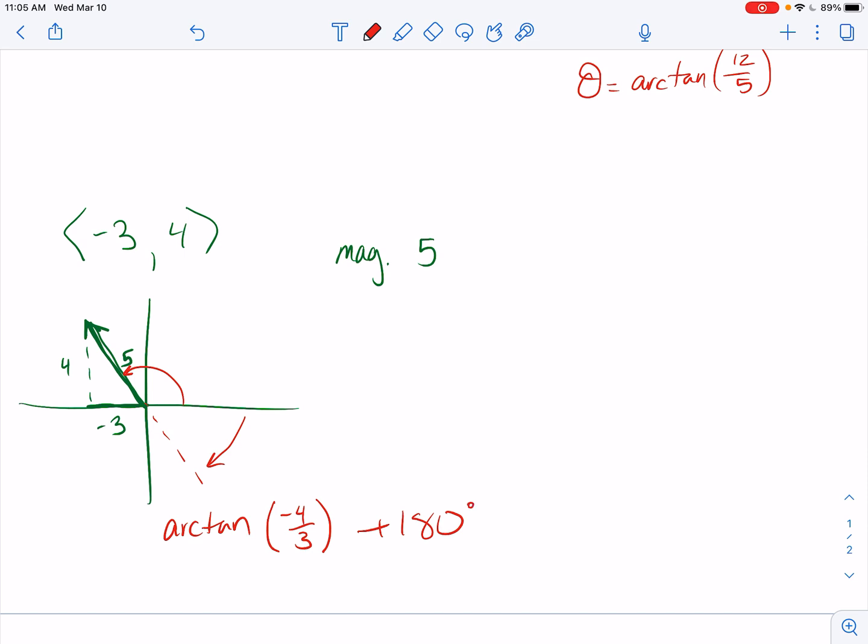Or we could say that it's arctan of negative 4 thirds north of west.